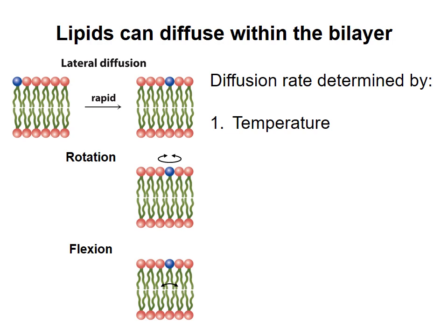Second, as the length of the hydrocarbon tails increases, the rate of diffusion decreases. This is because the tails attract each other through induced dipoles, and so they experience something like friction as they slide past each other. The more carbons, the more friction, and the slower the diffusion.